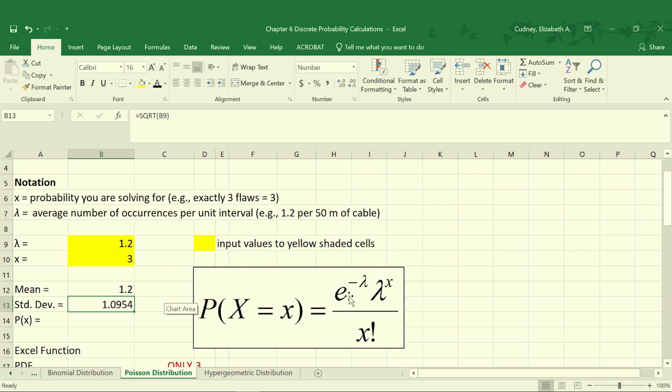And then our probability is e to the negative lambda multiplied by lambda raised to the x power divided by x factorial. In our equation, when we're typing in e, that is a specific constant. And so we'll use the exp function. So it's exp raised to the negative value for lambda, which was B9 in our equation. So our probability that there are exactly three flaws is 0.867 or 8.67%.